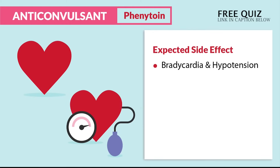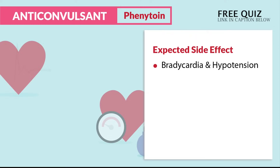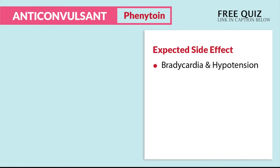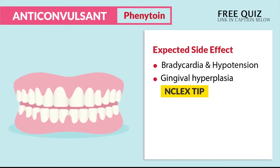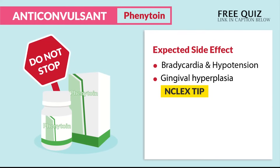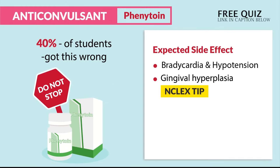Some expected side effects: we expect bradycardia and hypotension, since it's a CNS depressant — we expect low and slow vitals. Now the big key point here is gingival hyperplasia — a huge NCLEX tip. Fancy words for overgrowth of gum tissue around the teeth, resulting in big gums that bleed very easily. This is to be expected, so we don't stop the drug for this. 40% of students got this wrong and wanted to stop the drug. Remember: big gums are completely normal.